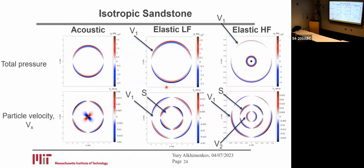Here is a 2D example — a typical response of an isotropic sandstone. If our medium is acoustic, we can observe just the fast wave. If our medium is elastic, in addition to the fast wave, you can observe a shear wave.